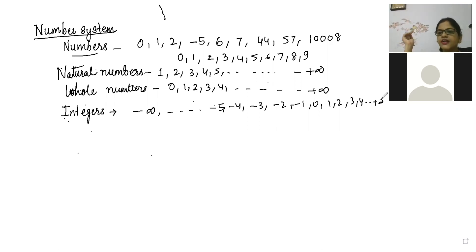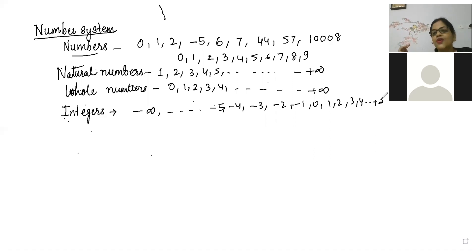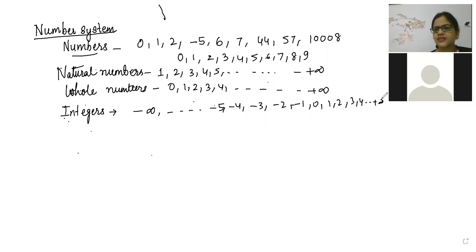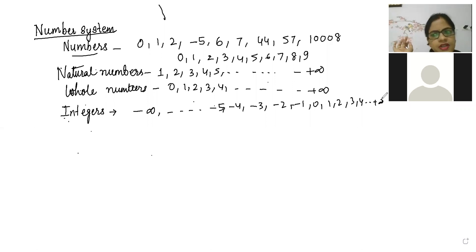Those numbers which start from minus infinity — minus five, minus four, minus three, minus two, minus one, zero, one, two, three, four — till positive infinity will be called as integers. Kanishka is telling: positive and negative numbers including zero is exactly integer. Very good Keshav, Kanishka, Ashwin.